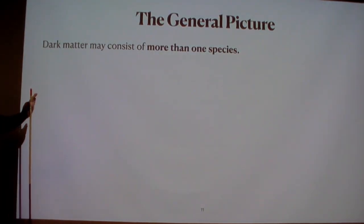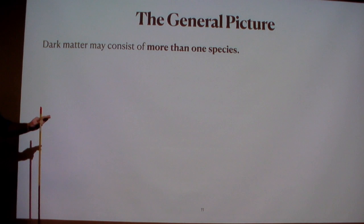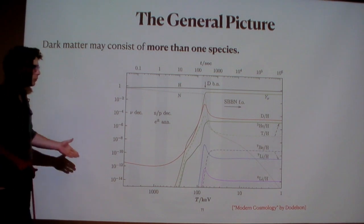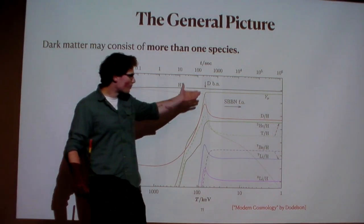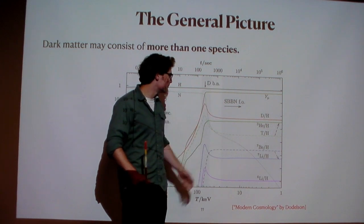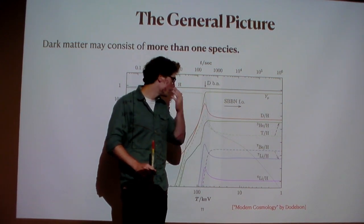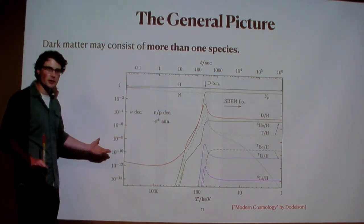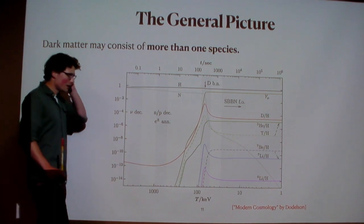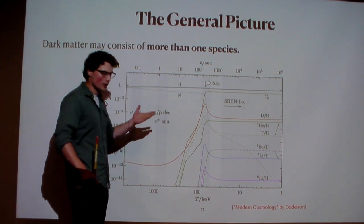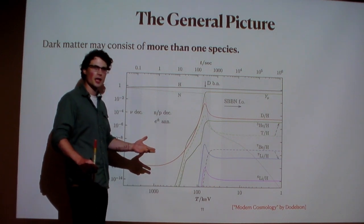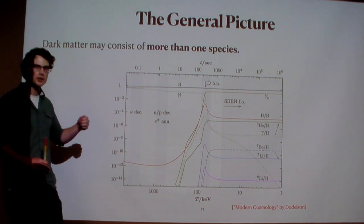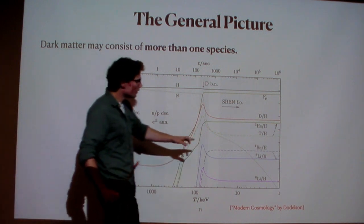I'm going to explain that there exists an irreducible axion background — a background of axions which act essentially like dark matter but are only a sub-fraction of the total dark matter energy density, which is extremely hard to remove by modifying cosmology. Fractional abundance is not an exotic thing; it's very likely that dark matter consists of multiple different species. In the standard model, BBN gives us many different types of stable particles with exponentially suppressed fractional abundances, but they're still relevant.